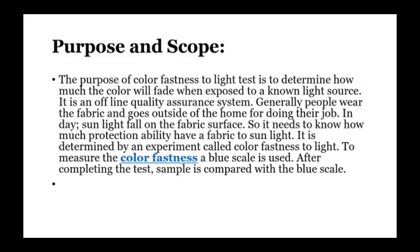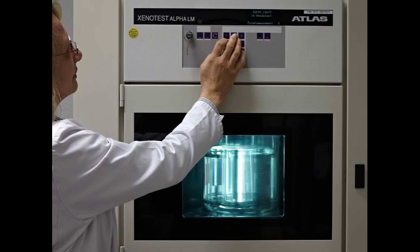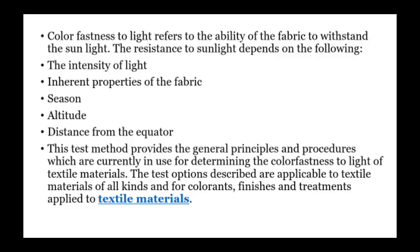Purpose and scope. The purpose of the color fastness to light test is to determine how much the color will fade when exposed to a known light source. It is an offline quality assurance system. Generally, people wear fabric and go outside for their daily activities, and sunlight falls on the fabric surface. So it is necessary to know how much protection ability a fabric has against sunlight. This is determined by an experiment called color fastness to light. To measure the color fastness, a blue scale is used. After completing the test, the sample is compared with the blue scale. Color fastness to light refers to the ability of the fabric to withstand sunlight.